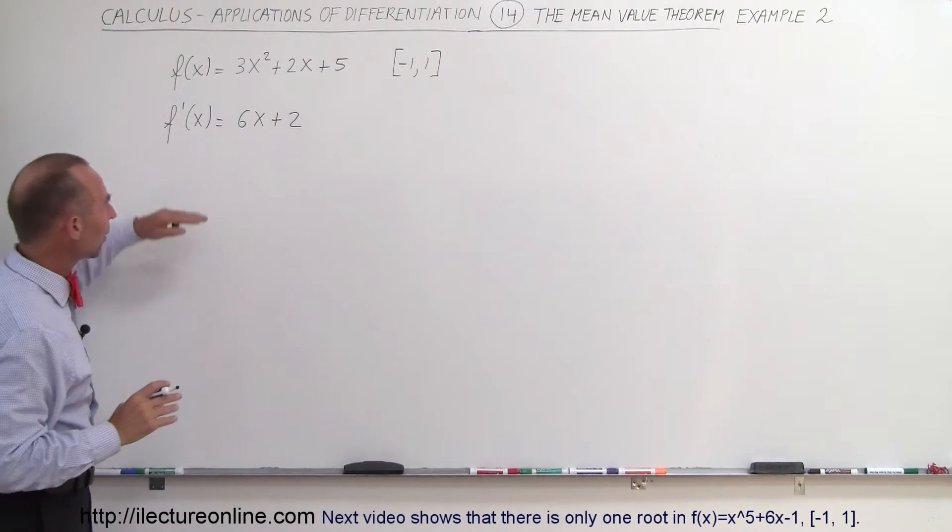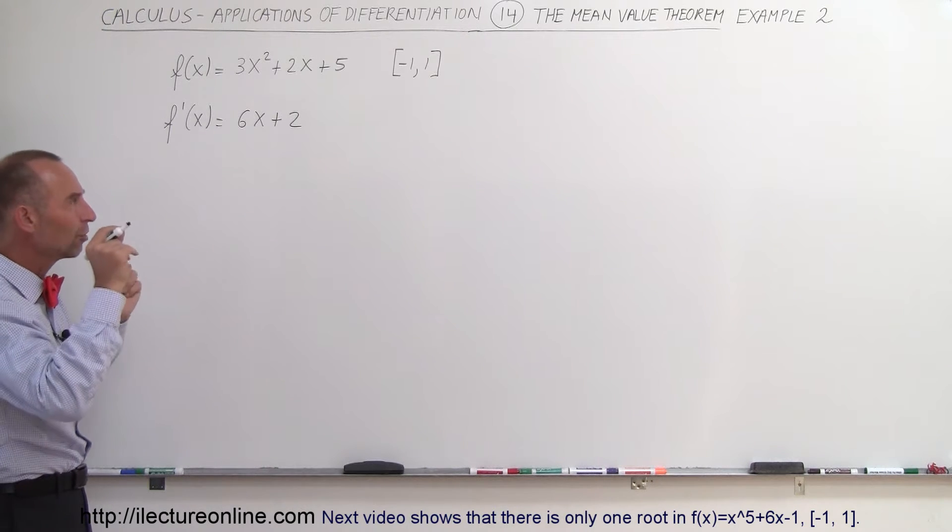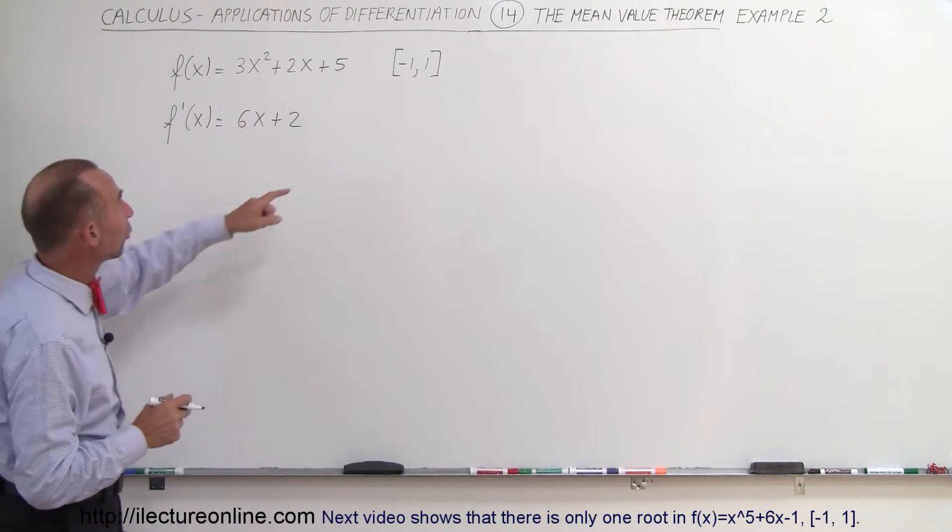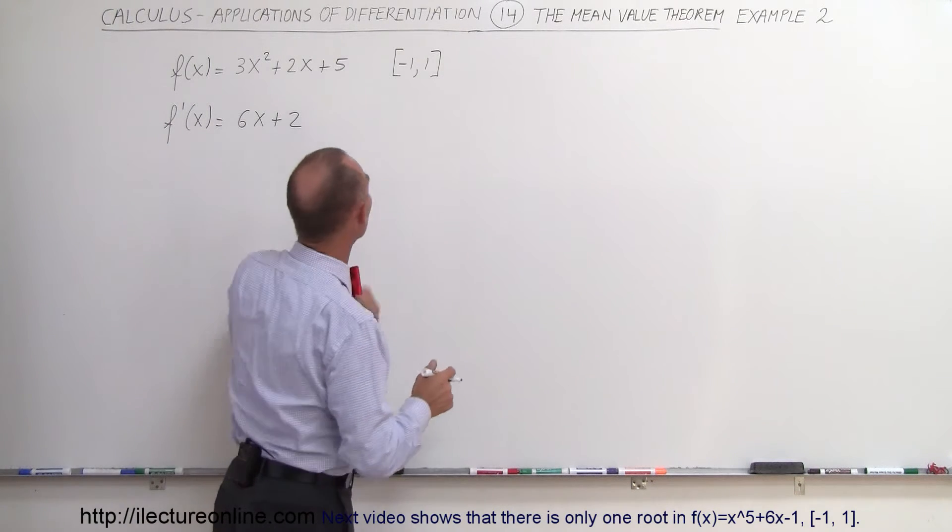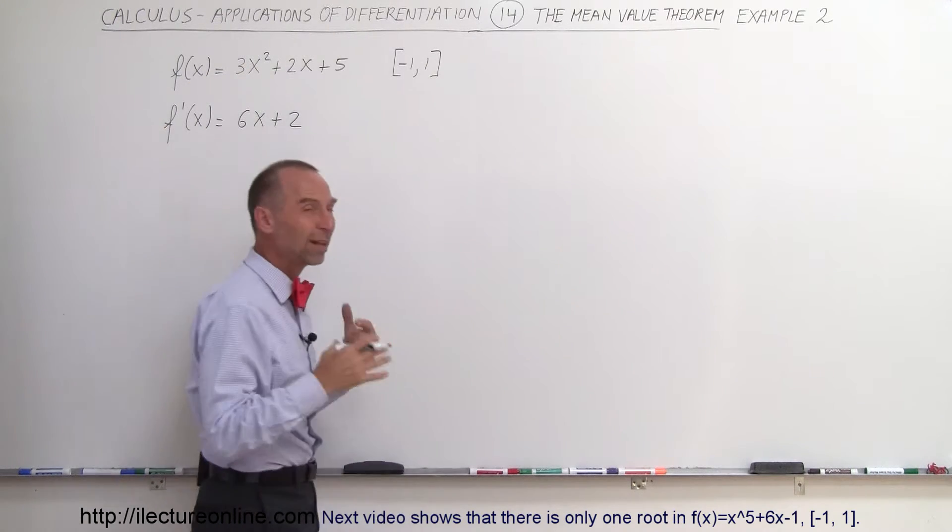So before I can move further, I need to know what the slope is of the straight line between the two points, and to do that we have to find the corresponding y value of the endpoints. So I'm going to evaluate the original function at these two points to get the corresponding y values.